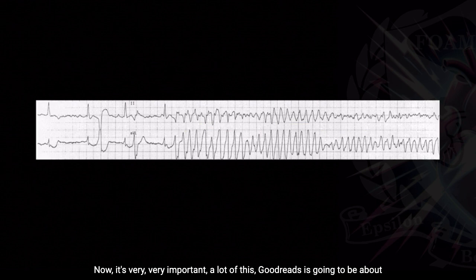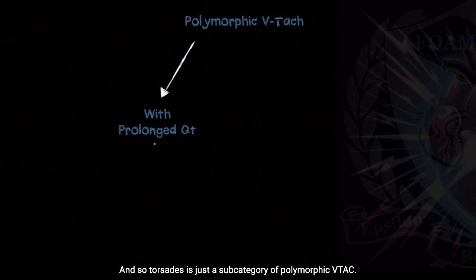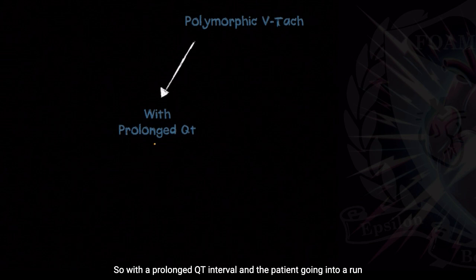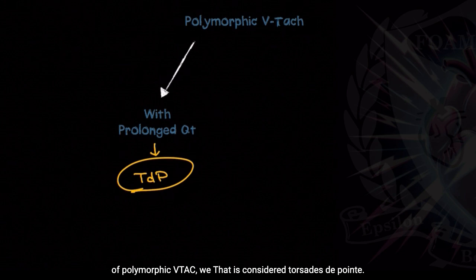Now, it's very, very important. A lot of this Goodread is going to be about nomenclature, and I think a lot of people get confused with torsades. Torsades is just a subcategory of polymorphic VTAC. In order to diagnose somebody with torsades, we need to see an underlying 12-lead, and what we need to see is a prolonged QT interval. So with a prolonged QT interval and the patient going into a run of polymorphic VTAC, that is considered torsades de pointes.